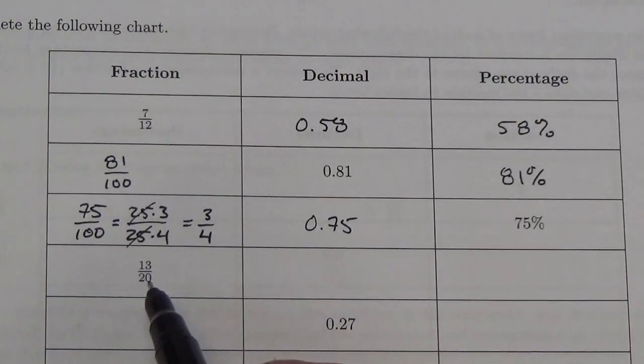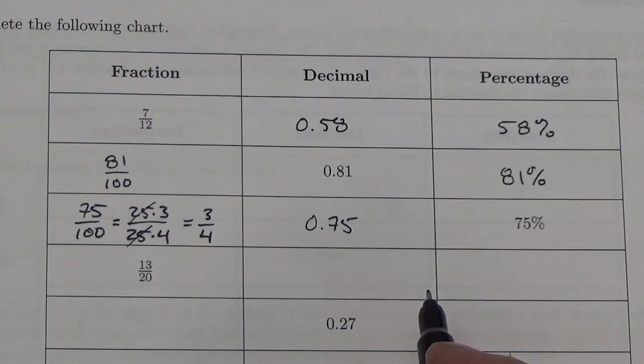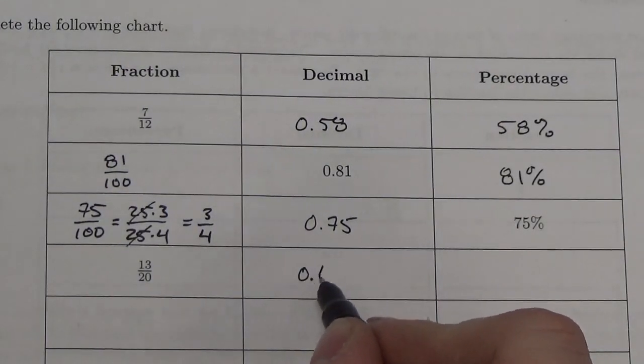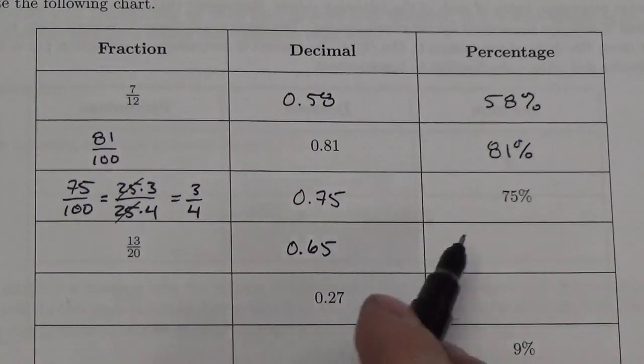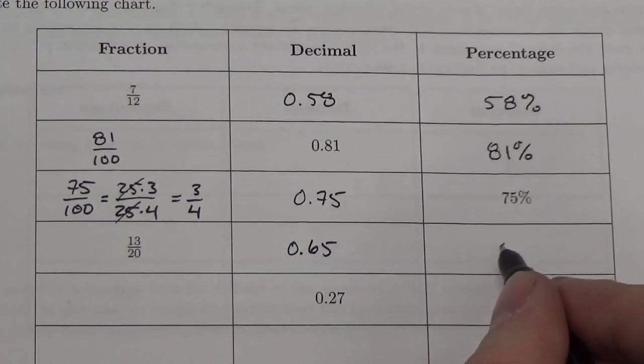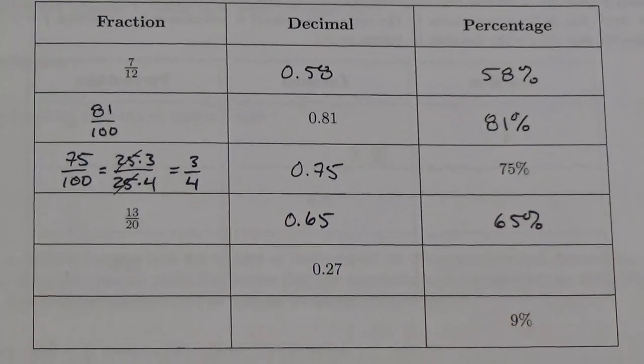Now, let's go through and do this again here. 13 over 20, well, I'm going to go to my calculator and just plug that in and evaluate that. And I'm going to get 0.65. And then, to convert that to a percentage, I'm just going to move the decimal over, and that becomes 65%. Easy.